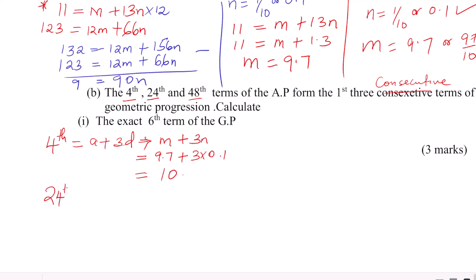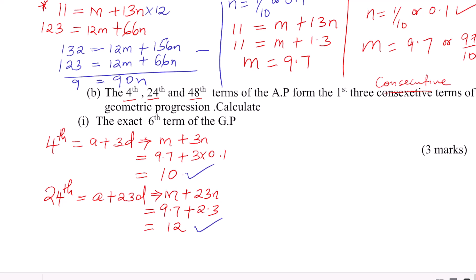The 24th term of the AP is written as A plus 23D. Substituting A equals M equals 9.7 and D equals N equals 0.1: the 24th term is 9.7 plus 23 times 0.1, which is 9.7 plus 2.3, giving 12. So the 4th term is 10 and the 24th term is 12.